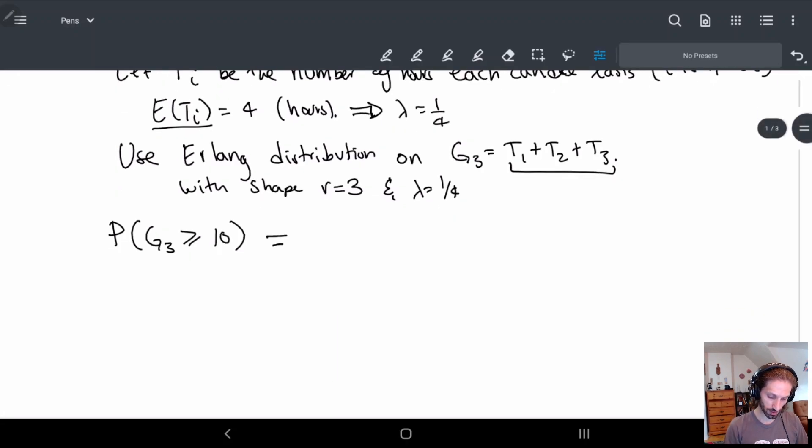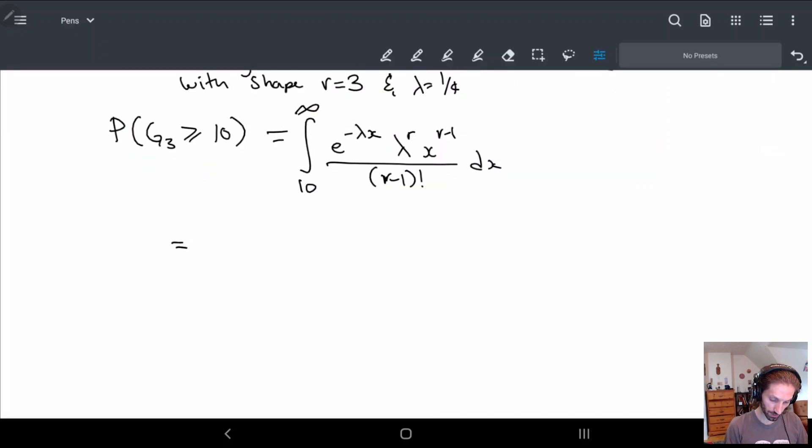Well so what is this equal to? This is equal to, and if you recall what we had for this distribution, it's the integral from 10 to infinity, at least 10, e to the minus lambda x. I'll do this slowly. Lambda to the r, x to the r minus 1, all over r minus 1 factorial dx. So here we're going to plug things in. 10 to infinity, e to the lambda is 1 fourth, so minus x over 4, 1 over 4 to the r, x to the r minus 1 is 2, over 2 factorial dx.